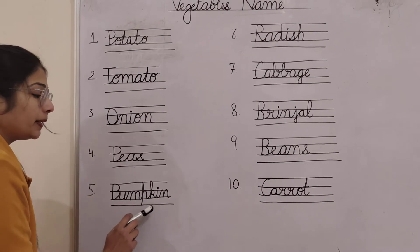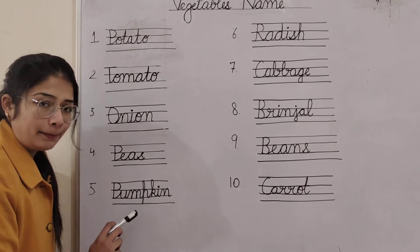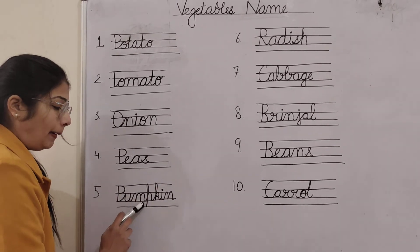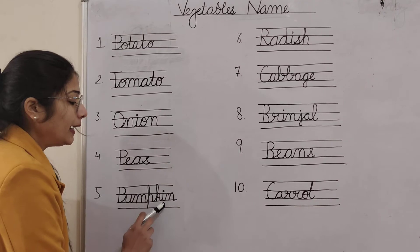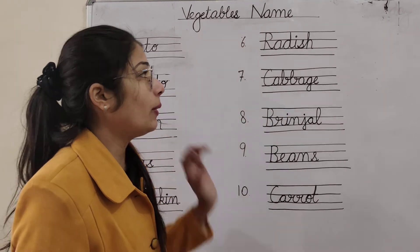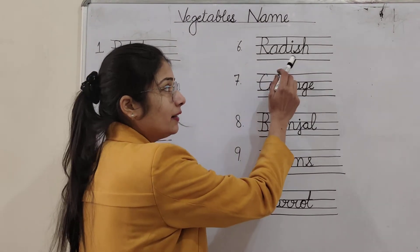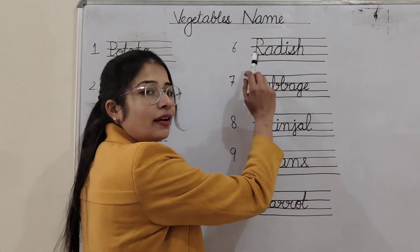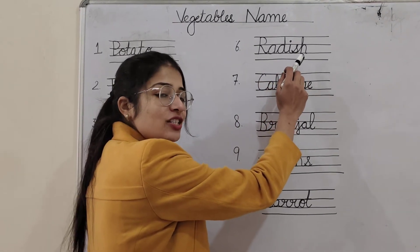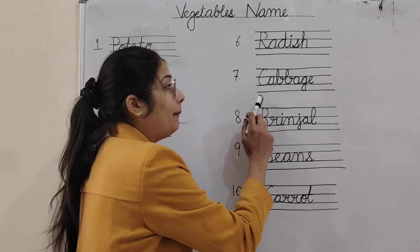Number 5 is pumpkin. P-U-M-P-K-I-N. Pumpkin. Now see the sixth one. Radish. R-A-D-I-S-H. Radish. R-A-D-I-S-H. Radish.